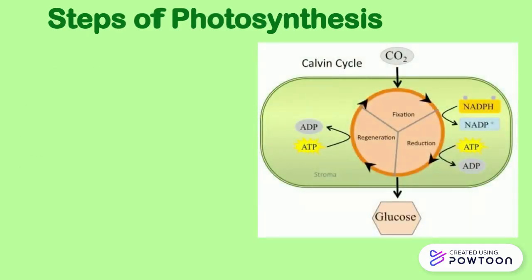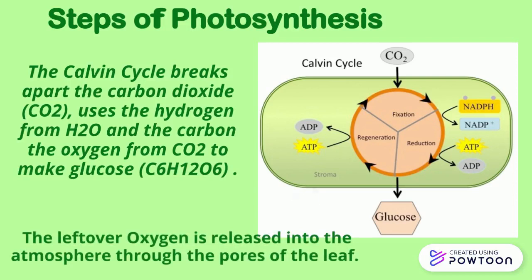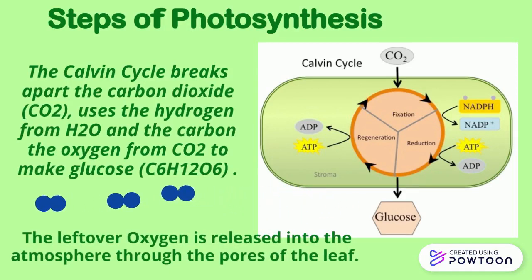In this step of photosynthesis, the Calvin cycle breaks apart the carbon dioxide, uses the hydrogen from the H2O, and the carbon and oxygen from CO2 to make glucose, C6H12O6. The leftover oxygen is now released into the atmosphere through the pores of the leaf.